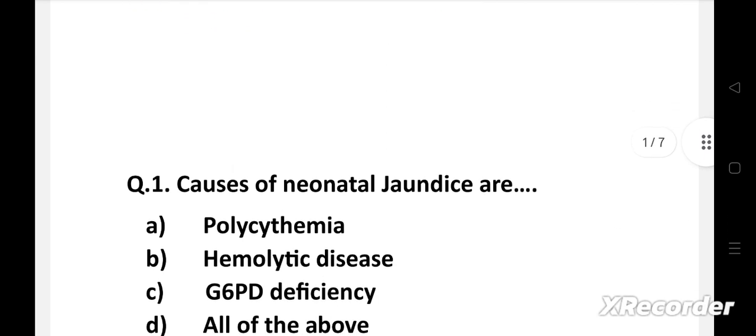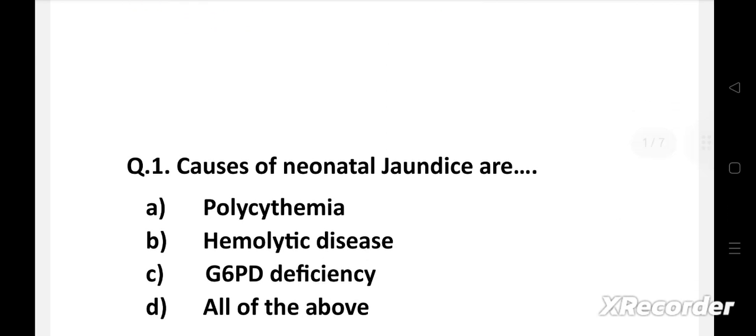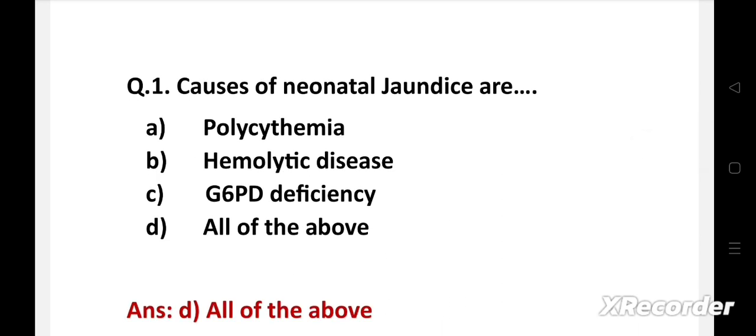Question number one: Causes of neonatal jaundice are option A polycythemia, B hemolytic disease, C G6PD deficiency, D all of the above. Right answer is option D, all of the above. Polycythemia, hemolytic disease, and G6PD deficiency are the causes of neonatal jaundice.